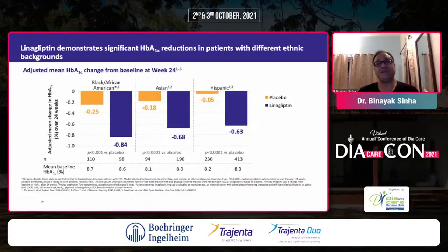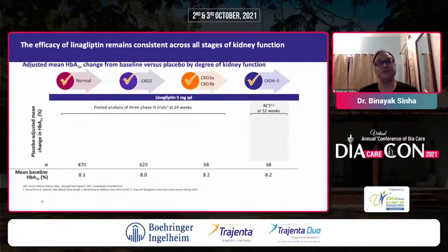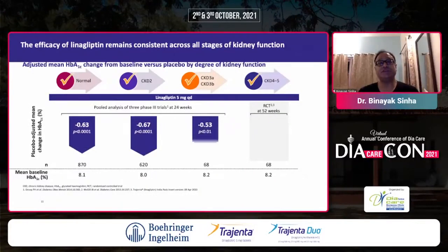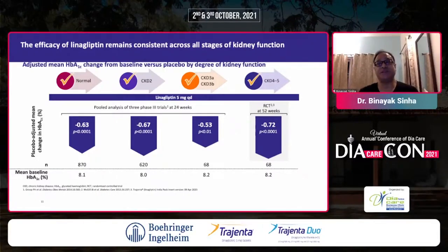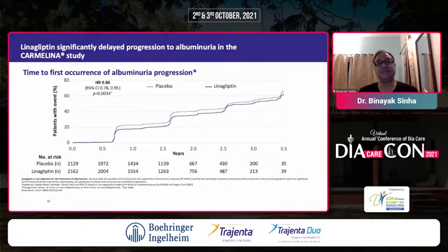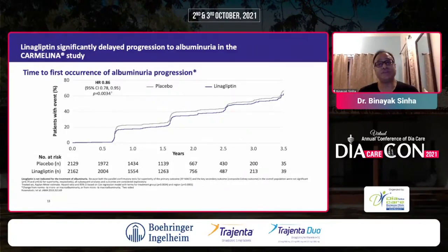What about Indo-Asians, Blacks, and Hispanics? Across all ethnicities, there is a similar reduction of HbA1c compared to placebo with a baseline HbA1c of about 8.5%. You can also use it across degrees of renal function — the p-value of interaction is not significant, with about 0.5% to 0.7% reduction. In an RCT in very late kidney disease, HbA1c reduction with linagliptin is maintained. The Carmelina study showed a 14% reduction to the first appearance of albuminuria with linagliptin compared to placebo, which is an added advantage.